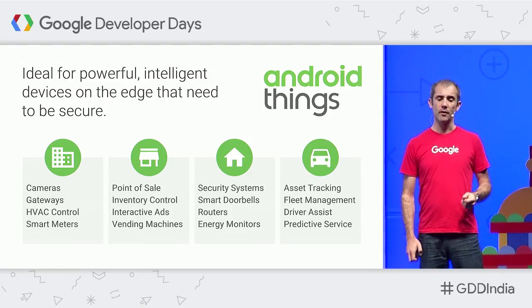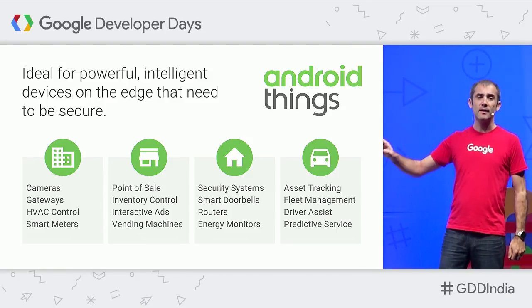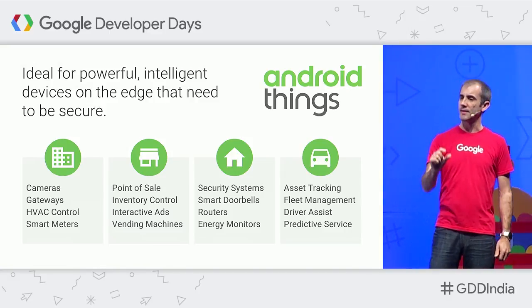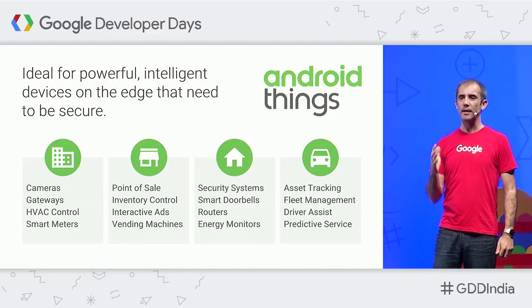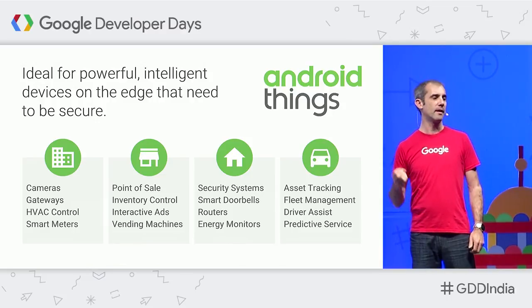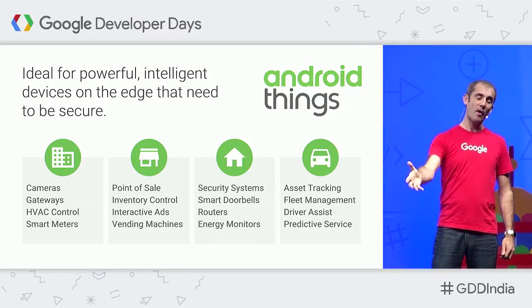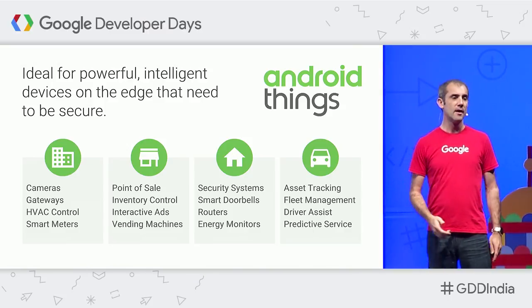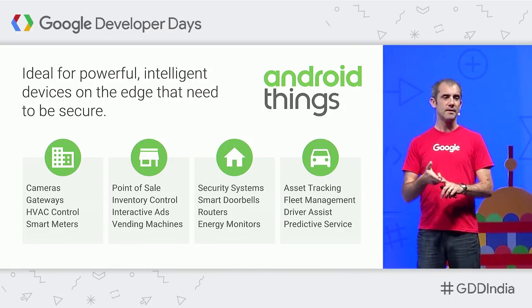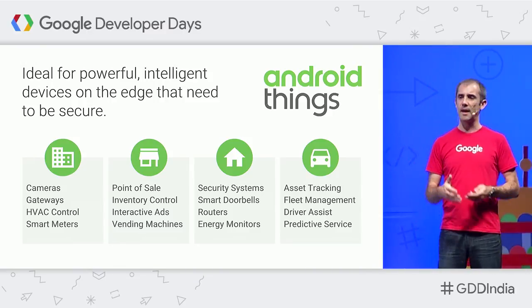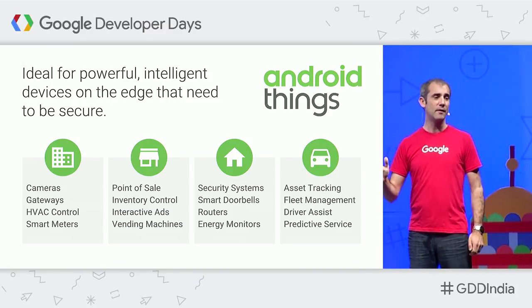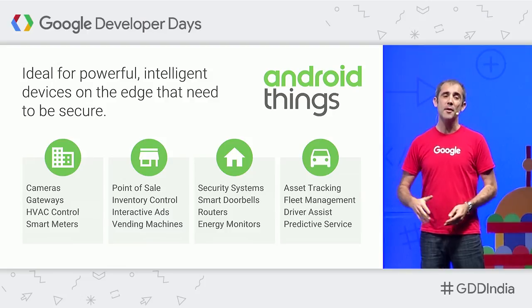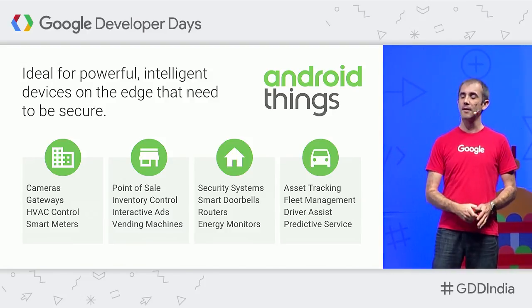What can you use Android Things for? It's ideal for powerful and intelligent devices — not just little things that support switches and lights, but really complex applications like audio processing, video processing, and on-device machine learning. There are many different use cases: enterprise, businesses, and consumer devices. IoT is going to be a big thing — we had desktops, then laptops, then phones, and IoT is going to be bigger than even those.